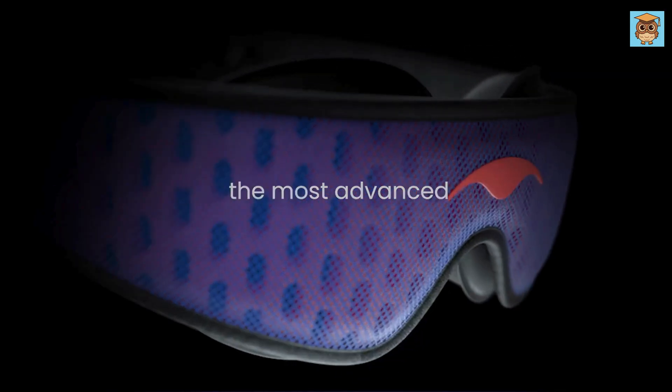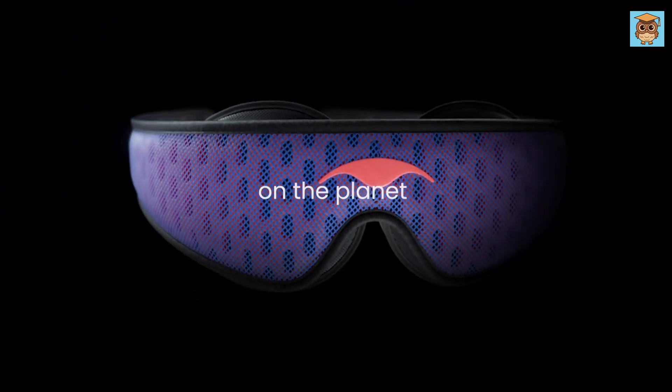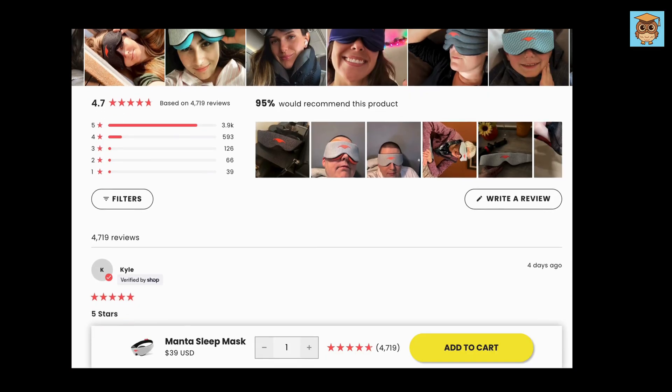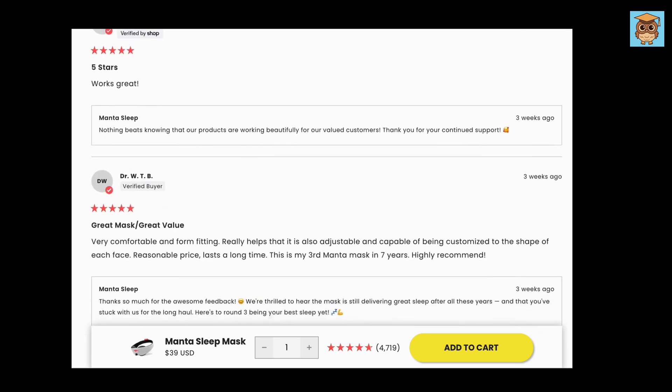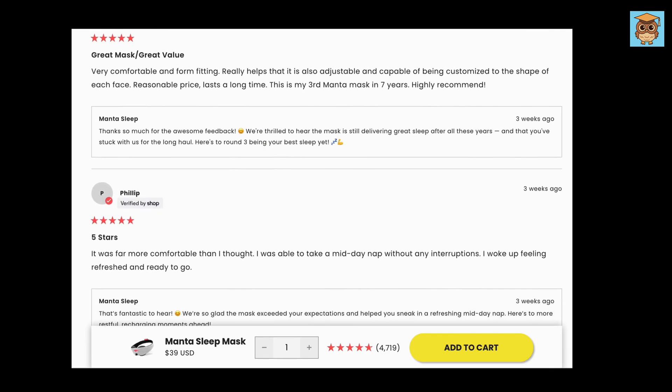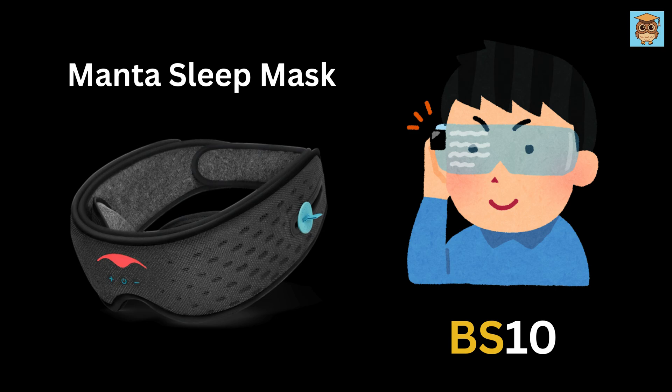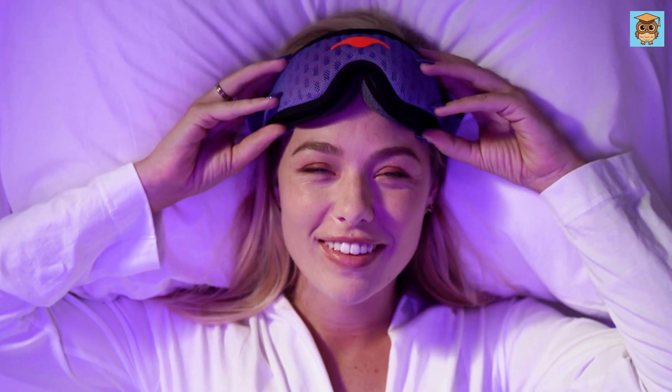It's soft, adjustable, and doesn't press on your eyes, so you can blink freely or even nap in bright daylight. Customer reviews are generally super positive, highlighting the mask's comfort and effectiveness in blocking light. Use the link provided in the description, and don't forget to apply the code BS10 to get 10% off on your Manta Sleep Mask, because better sleep means a better you.